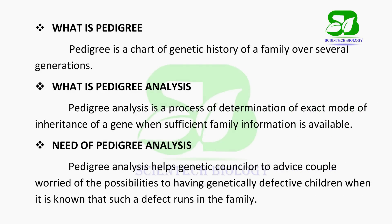Pedigree is a chart of genetic history of a family over several generations. Whereas pedigree analysis is a process of determination of the exact mode of inheritance of a gene when sufficient family information is available. Pedigree analysis helps the genetic counselor to advise couples worried about the possibilities of having genetically defective children when it is known that such a defect runs in their family.